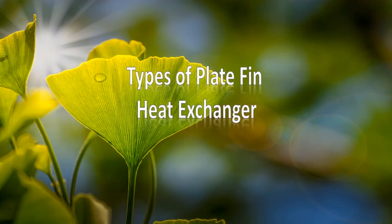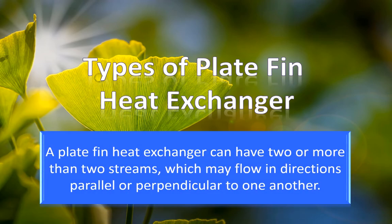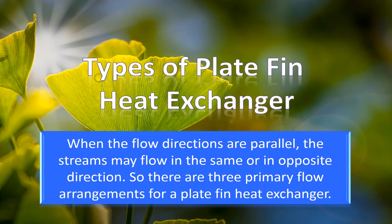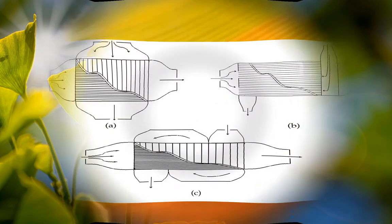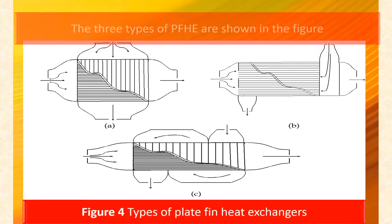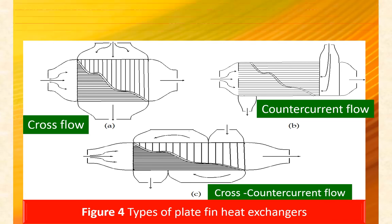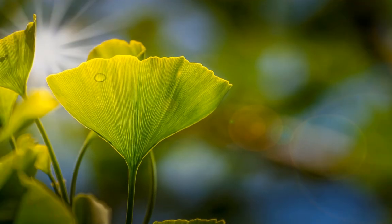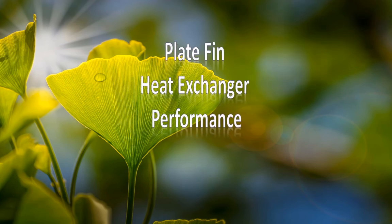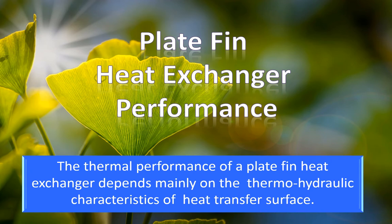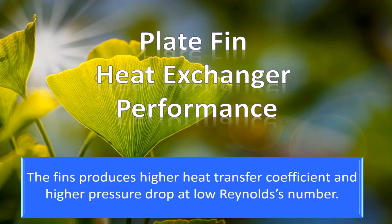4. Type of plate fin heat exchanger: a plate fin heat exchanger can have two or more streams flowing in directions parallel or perpendicular to one another. When flow directions are parallel, streams may flow in the same or opposite direction, giving three primary flow arrangements: cross flow, counter-current flow, and cross-counter-current flow. 5 & 6. Plate fin heat exchanger performance: thermal performance depends mainly on the thermohydraulic characteristics of the heat transfer surface. Fins produce a high heat transfer coefficient and higher pressure drop at low Reynolds number.